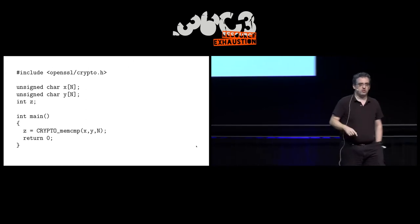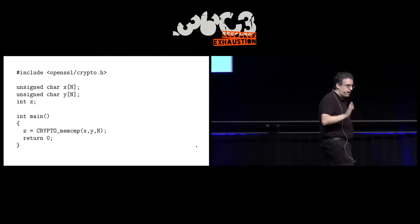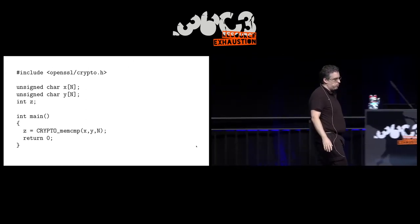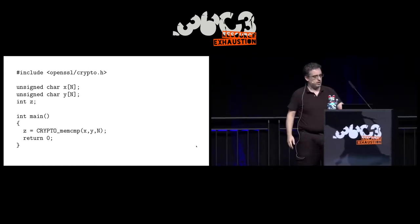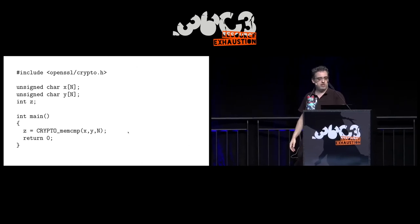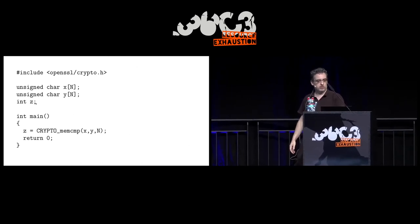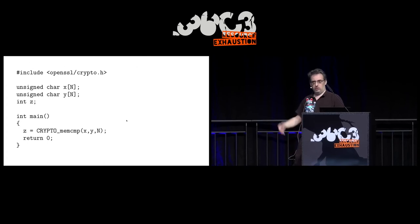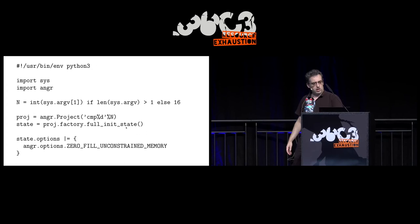There's X, Y, Z, and the compiler won't throw out this code. Maybe you need Z. Maybe something will happen with Z. And CryptoMemCmp will be called.